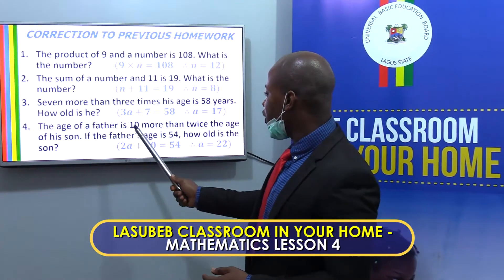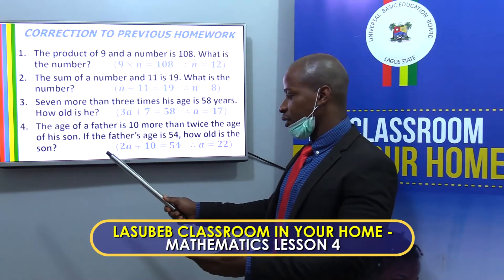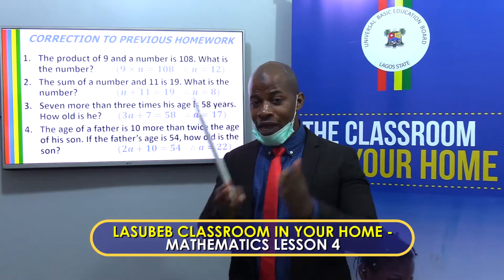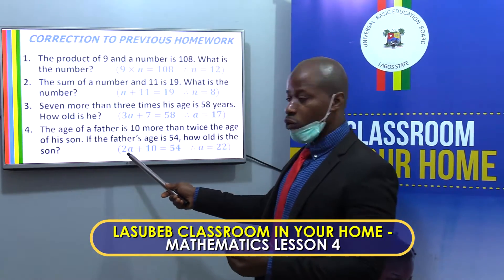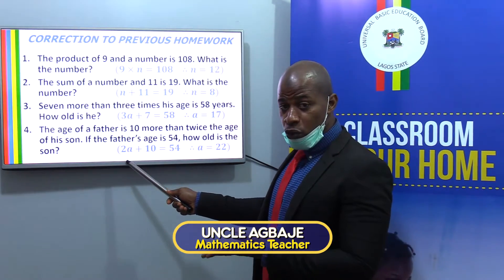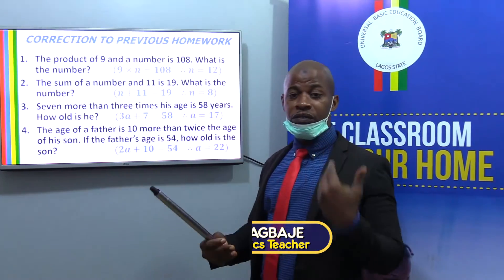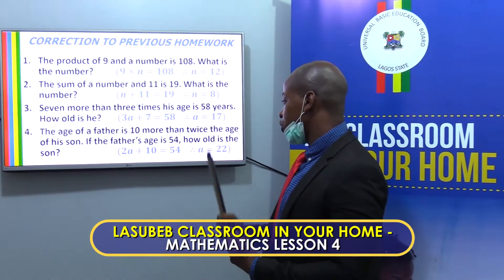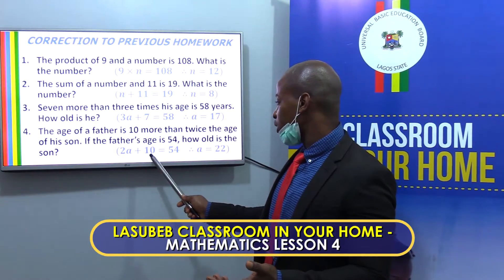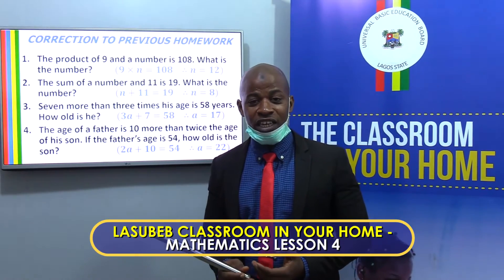The last question says the age of a father is 10 more than twice the age of his son. If the age of the father is 54, how old is the son? We need twice the age of the son, which is 2a. 10 more than twice is 2a plus 10 equals 54. Solving this, a is 22. Just to be sure, 2 times 22 is 44, and 44 plus 10 is 54. I am sure a lot of you did this well, and for that, you deserve a cheer.